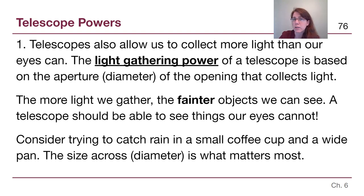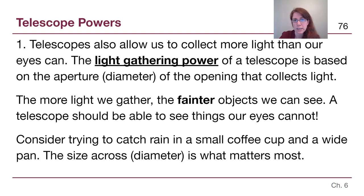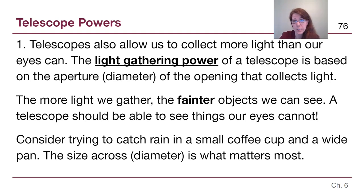The first big telescope power — the reason we want telescopes and not just our eyes — is that telescopes are larger across than our eyes, so they are able to collect more light. Even for a telescope collecting regular visible light, the bigger it is across, the more light it will gather, and the more light we gather, the fainter the objects we can see.